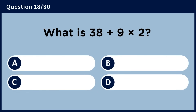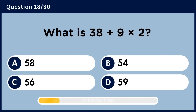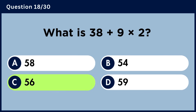What is 38 plus 9 multiplied by 2? Answer C: 56.